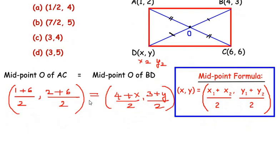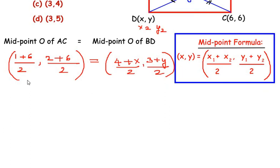Next we are going to equate the x coordinates together. That is equating (1 + 6)/2 with (4 + x)/2 to get the x coordinate of D. So here 1 + 6 is going to be 7, so 7/2 = (4 + x)/2.